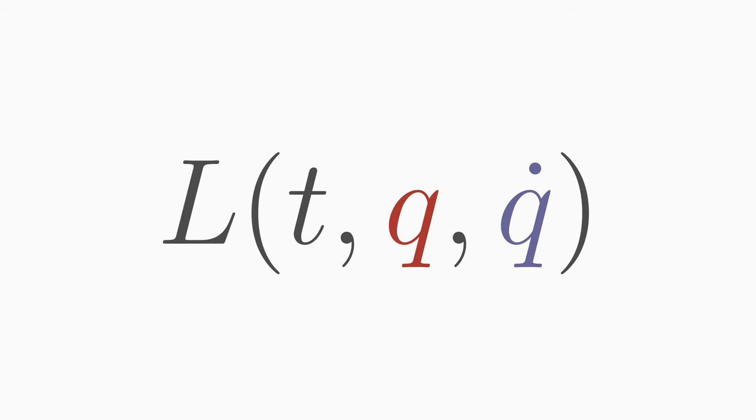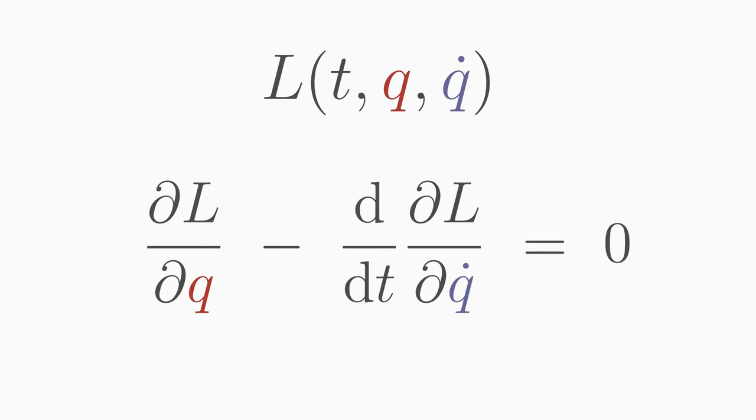The Lagrange function L is a scalar function that cannot be derived but can only be guessed or motivated. If you think you have discovered a suitable Lagrangian for a problem, be it from quantum mechanics, classical mechanics or relativity, you can easily check whether the Lagrangian you found describes your problem correctly or not by using the Euler-Lagrange equation.